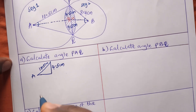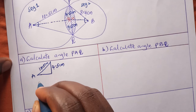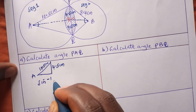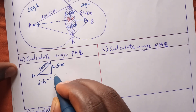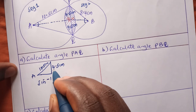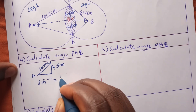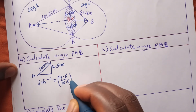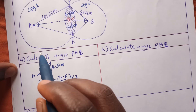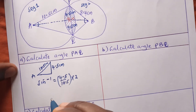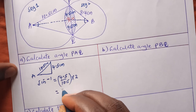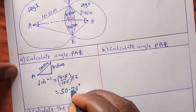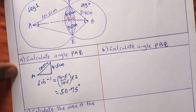Using sine, we get the sine inverse of the opposite over hypotenuse: sine inverse of 4.5 divided by 10.5, then multiply by 2 to get the full angle. This gives us 50.75 degrees.